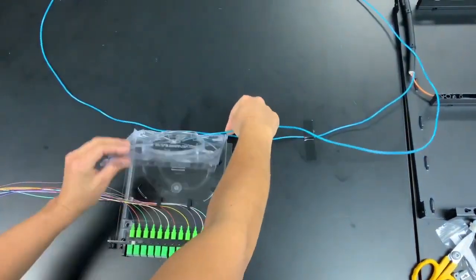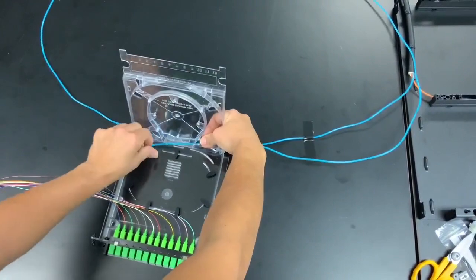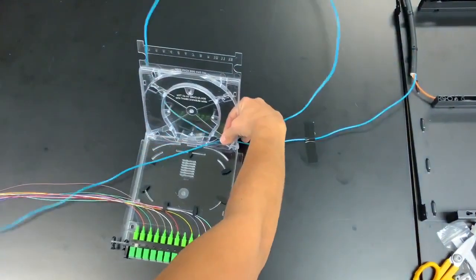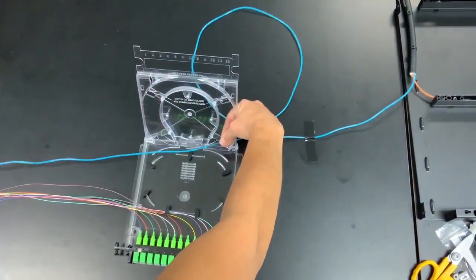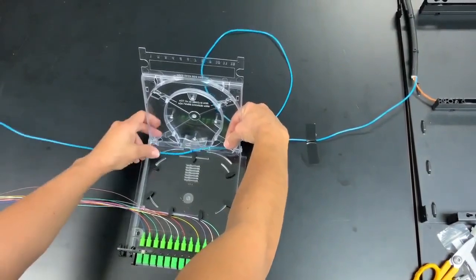Lift the cassette's top cover and route the buffer tube into the underside of the top cover through the entry point located on the bottom right side. Be careful not to kink the buffer tube or exceed the bend radius.